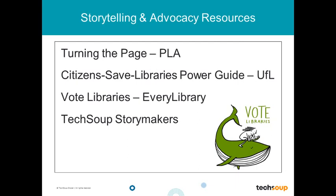If you are looking to get more storytelling and advocacy resources, a few links will be shared in the archive. One is from the Public Library Association called Turning the Page, a set of free advocacy training available online. United for Libraries, the association for friends and foundations groups, has the Citizens Save Libraries Power Guide. And Every Library, a political action committee for libraries, has Vote Libraries resources. Allie is also going to tell us more about TechSoup Storymakers, which our resources will reference quite a bit.